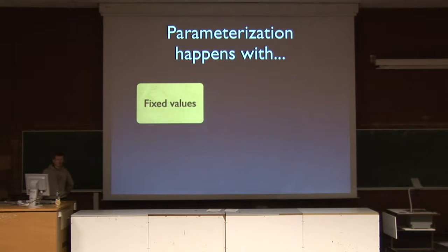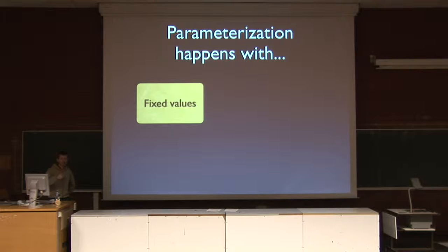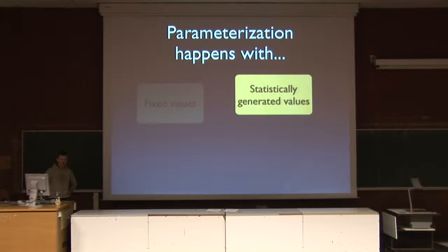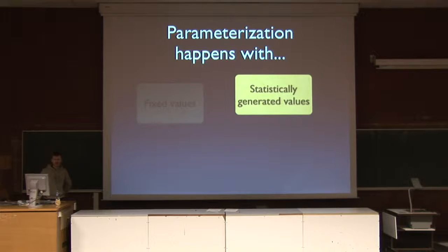Parameterization can happen with fixed values, by which I mean that we can assign constant values to our test input parameters that do not change over time during test execution. But it is also generally used for binding input test parameters to statistical functions, because we know that at runtime the system will be asked to provide values that generally mimic some well-known statistical function. The JTR framework comes with a bunch of statistical functions already built in, but you can also easily extend it.